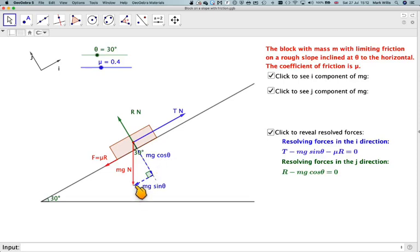So given the weight and the coefficient of friction, so given the weight, you can calculate R, then you've got R, then you can calculate that one, and then you can calculate T in newtons, which you can see in the later video.